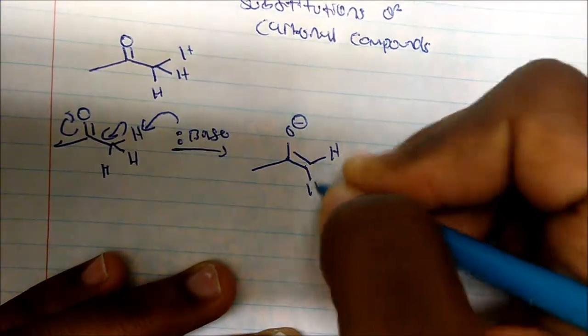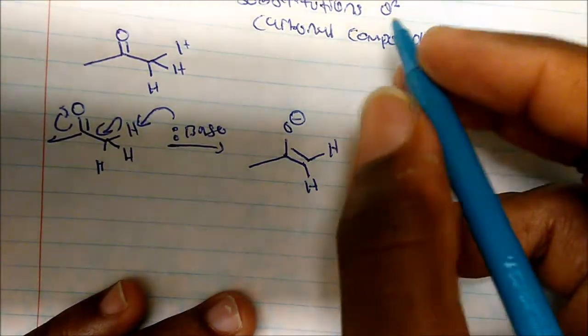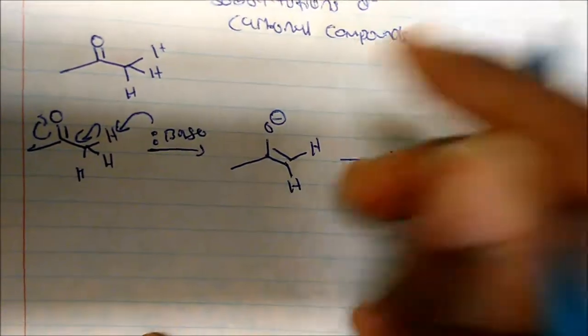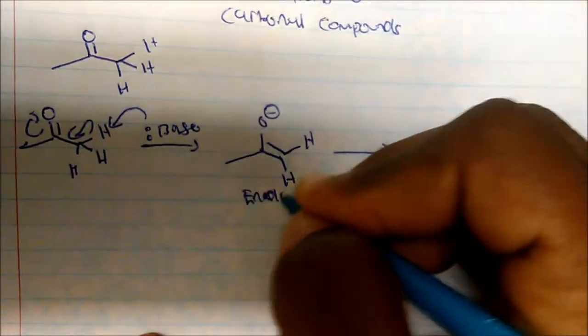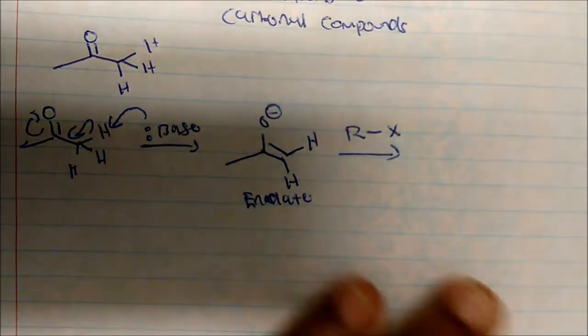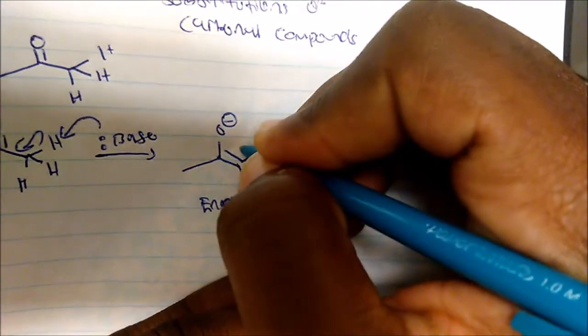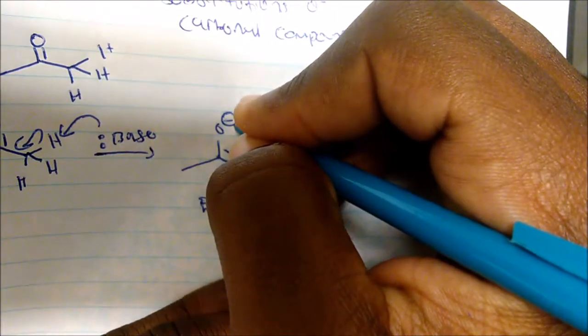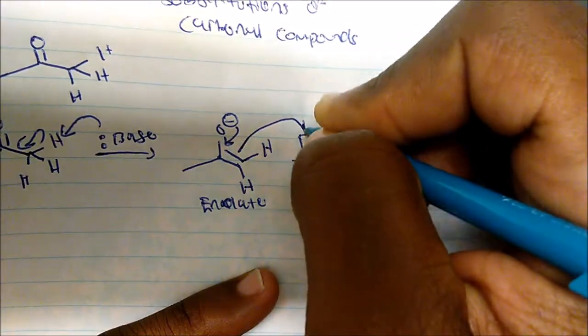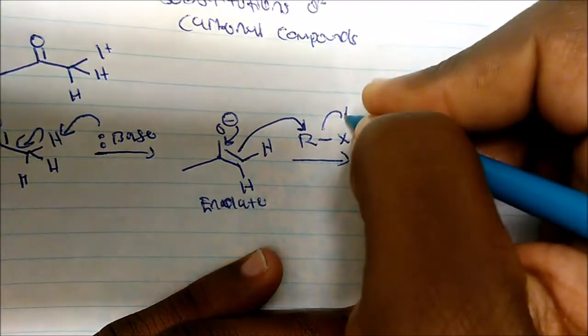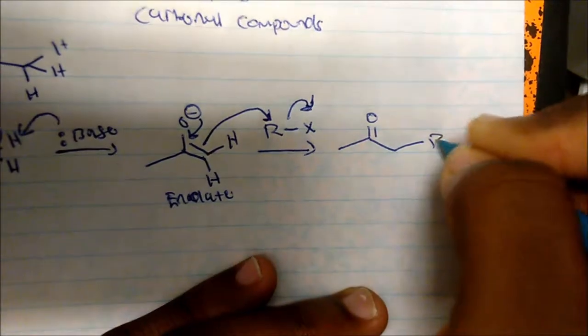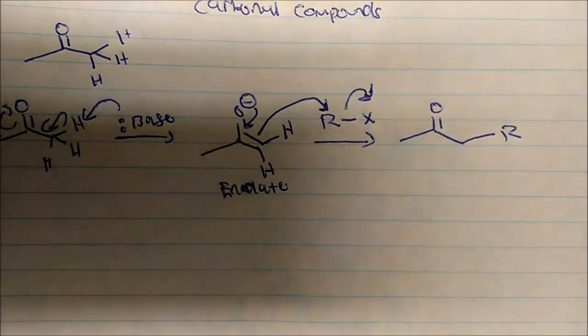This is the enolate form of the compound. We take the enolate form and add it to some RX where X is some sort of good leaving group. The negative charge in the oxygen will come and form a double bond, and the pi electrons will be nucleophilic, attack the R group and displace the X. This is a general reaction scheme.